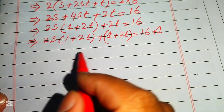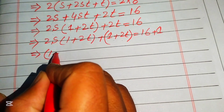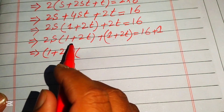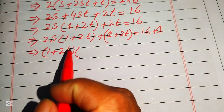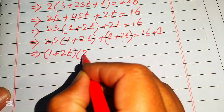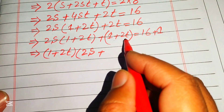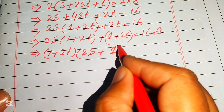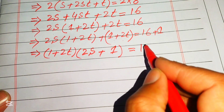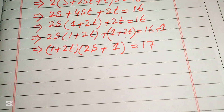Now (1 plus 2t) is clearly a common factor on the left-hand side. Taking (1 plus 2t) common, we get (1 plus 2t)(2s plus 1) equals 17.